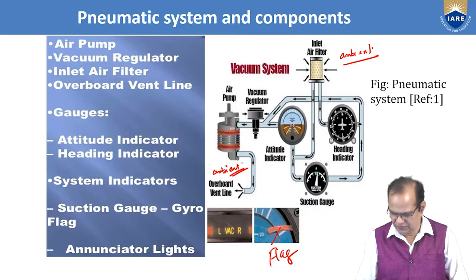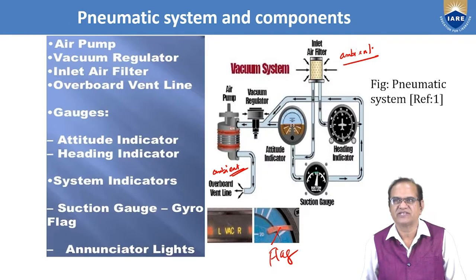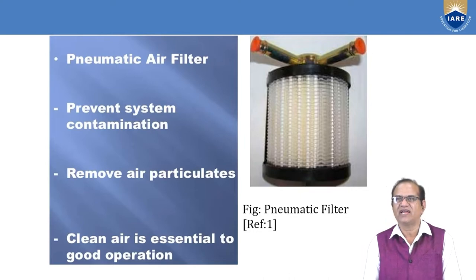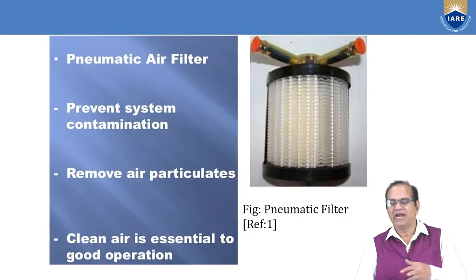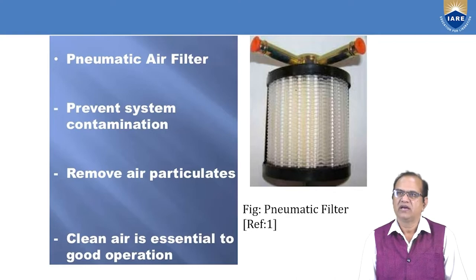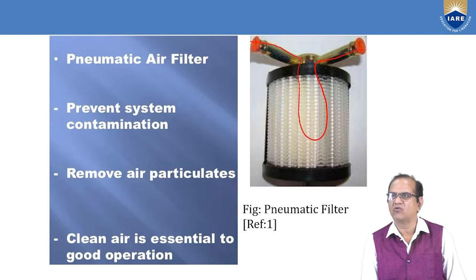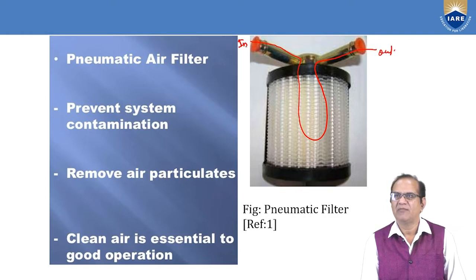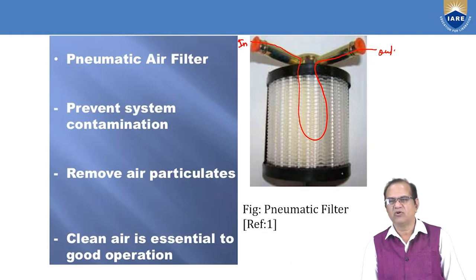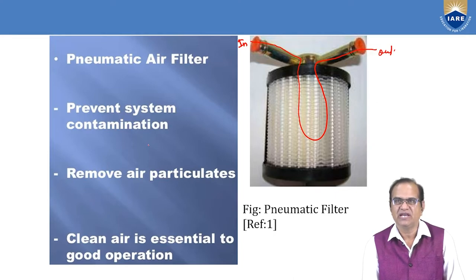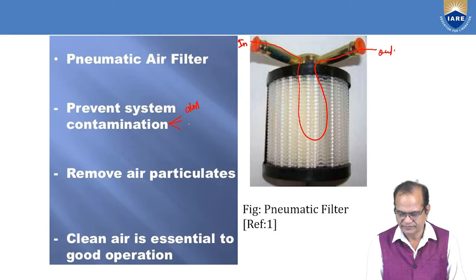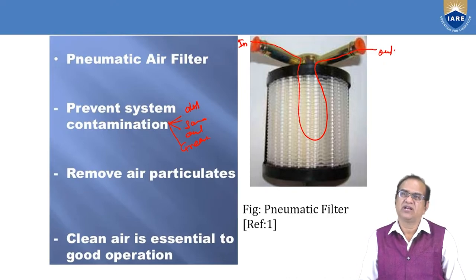This is the working principle of the pneumatic system. One key component is the filter: it contains many filter elements through which air enters, passes through, and exits. Any particles present are absorbed and removed, and the filter is cleaned over time. The pneumatic air filter prevents system contamination — contamination may include dust, sand, oil, grease, moisture, and other unwanted particles.